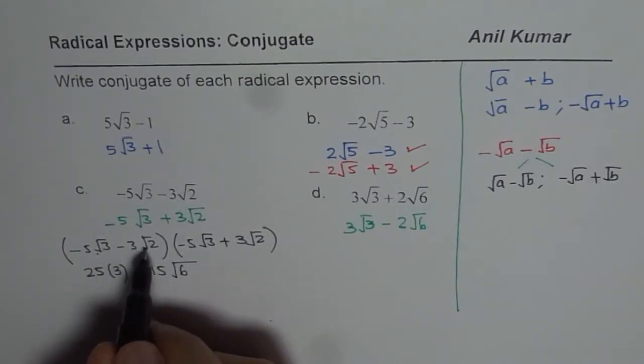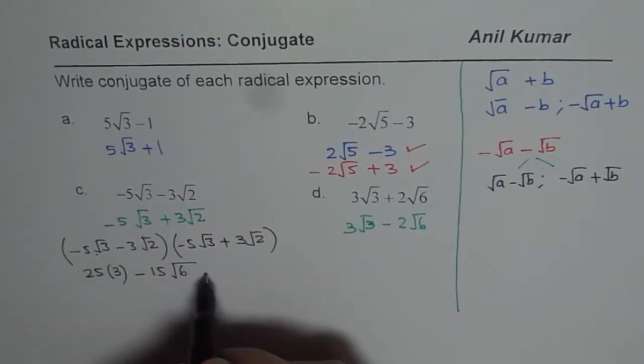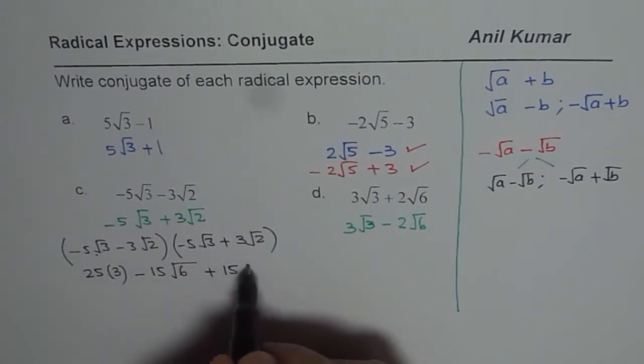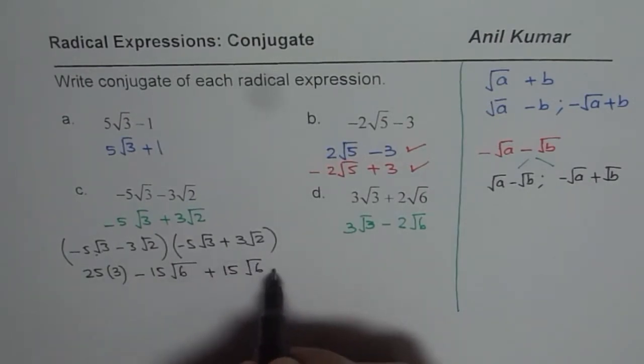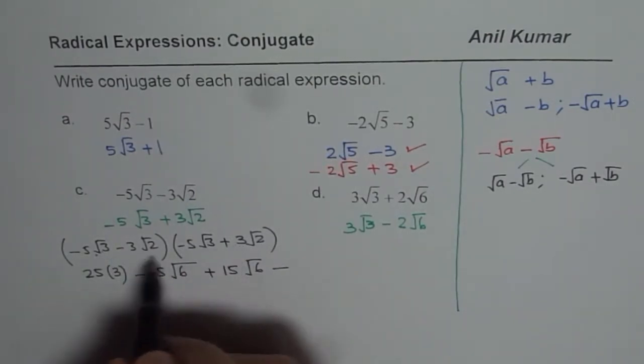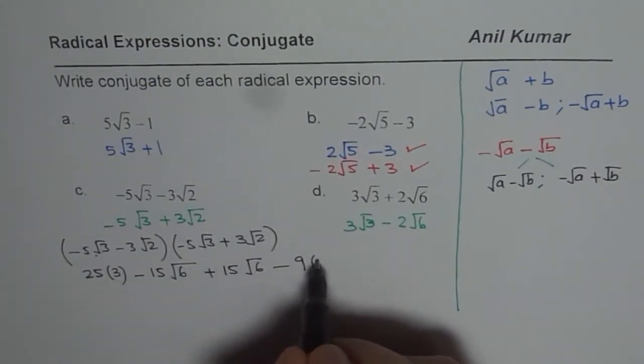Now let us multiply by -3√2. Minus minus becomes plus, 3 times 5 is 15. √2 times √3 is √6. And the last term here will be plus and minus is minus. 3 times 3 is 9. √2 times √2 is 2.